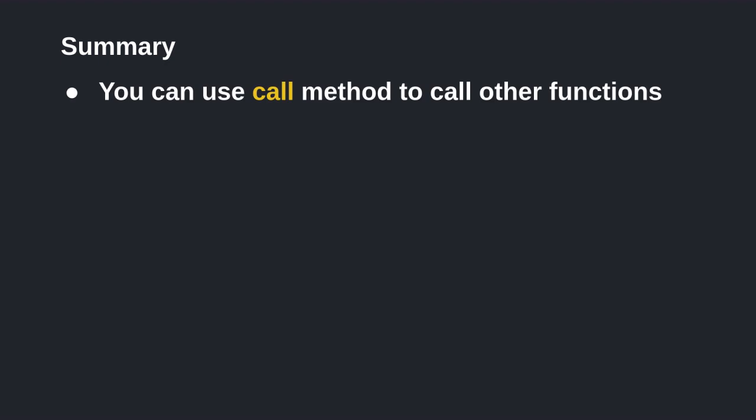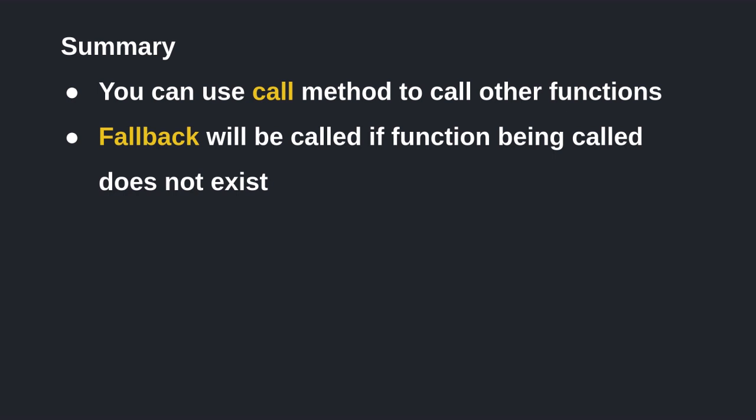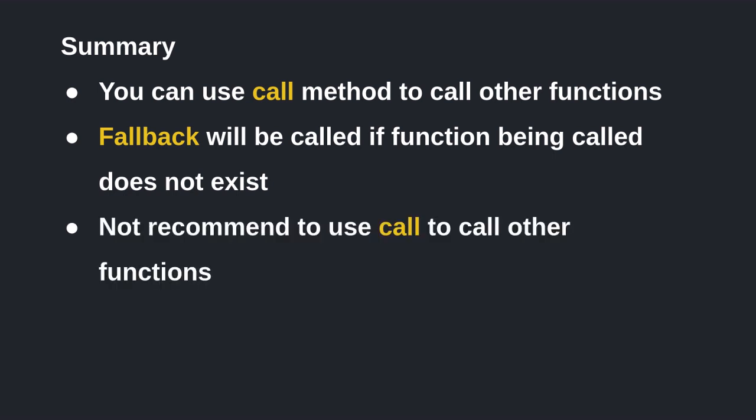In summary, you can use the call method to call other functions. If the function being called does not exist, then the fallback function will be called. This method is not the recommended way to call other functions, since it's very easy to mess up the function signatures. For example, even if you know that the function foo exists, if you mess up the function signature then the fallback function will be called instead.